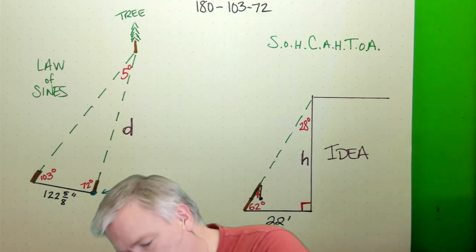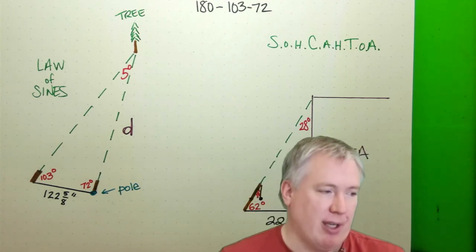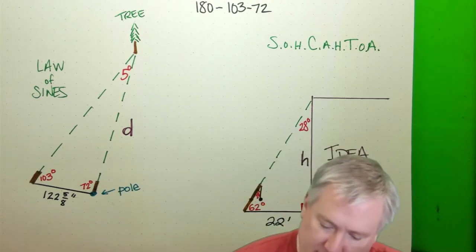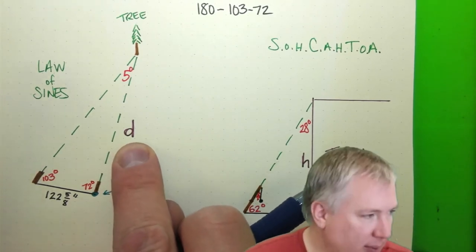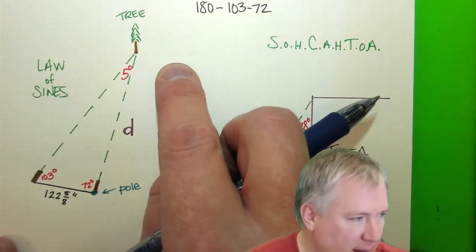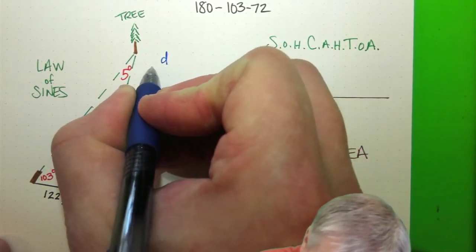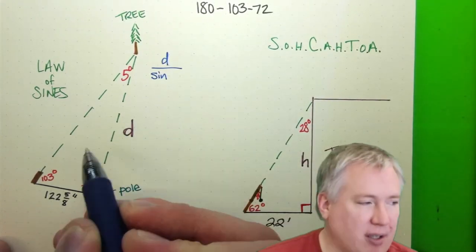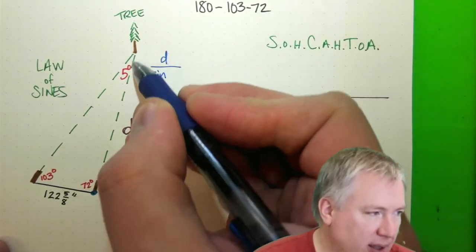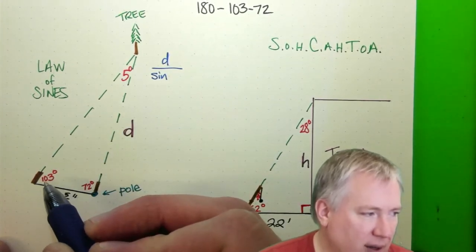And then the next thing you need to do is go ahead and write the equation. So I'm going to give you examples here. So what I'm going to do is, using the law of sines, it says I can take that D, and I'm going to write this equation right up here.